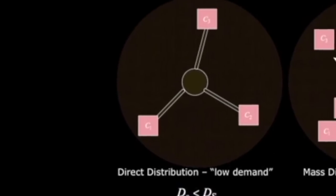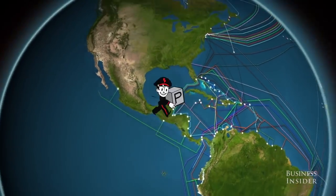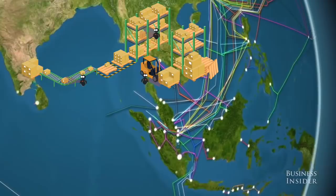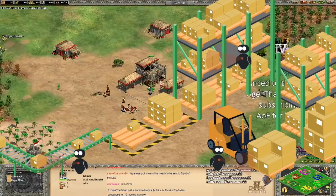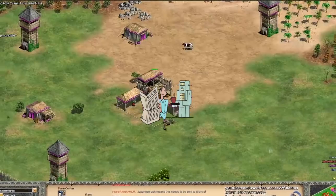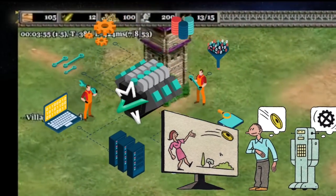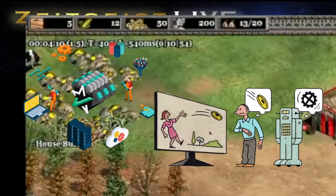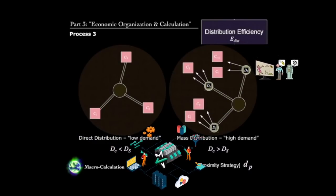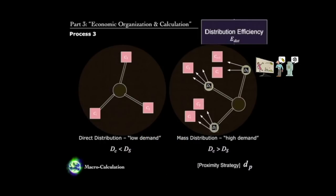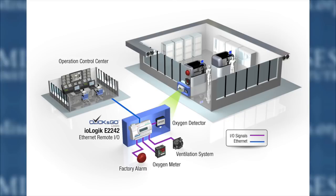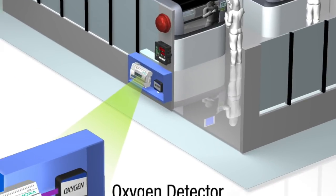All products are allocated based on the prior demand class determination. Low consumer demand products follow a direct distribution process. High consumer demand follows the mass distribution process, which would likely be the libraries in that case. Both low and high consumer demand products will be regionally allocated per the proximity strategy.